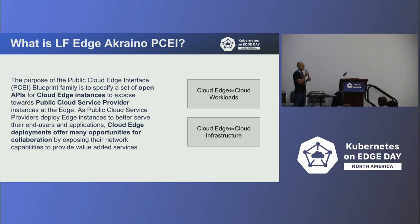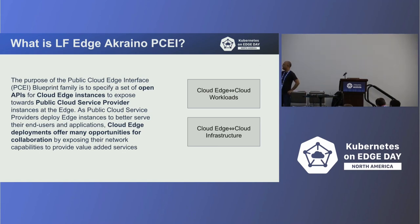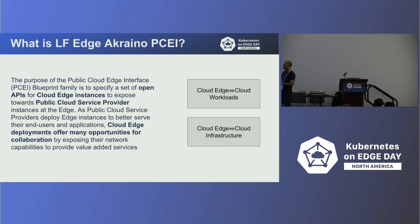For that reason, the thinking is that Cloud Edge deployments offer many opportunities for collaboration by exposing the network capabilities to provide value-added services. On the right-hand side, you see two pictures: Cloud Edge and Cloud Workload. Your application can straddle all the way from the edge to the public cloud, and same thing on the infrastructure — your infrastructure can straddle from the cloud edge to cloud infrastructure. We are going to see examples of both.